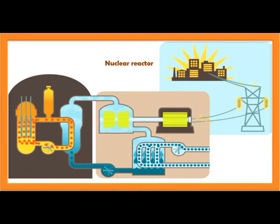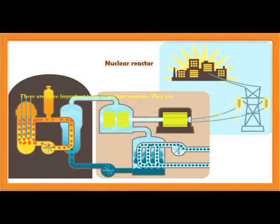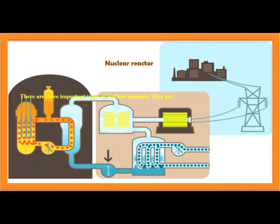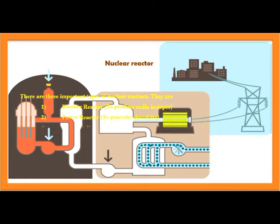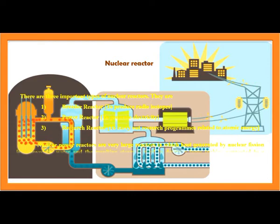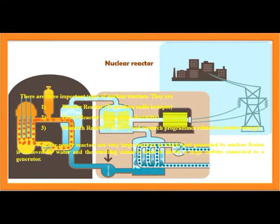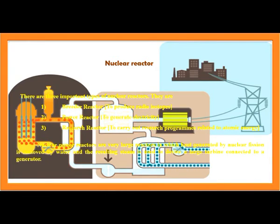Nuclear Reactor: There are three important types of nuclear reactors. First is the radio reactor, used to produce radioisotopes. Second is the power reactor, used to generate electricity. Third is the research reactor, used for research programs related to atomic energy. Nuclear power reactors are large reactors where heat from nuclear fission is removed by water, and the resulting steam drives turbines connected to generators.